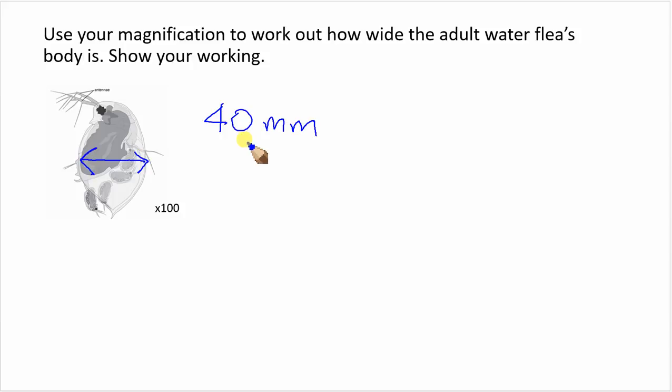Now this water flea appears 40 millimetres wide because it's been magnified 100 times. So to find out that width for real, the actual width, we're going to divide it by 100. 40 divided by 100, we move that decimal point a couple of places to the left. So it's actually going to be 0.4 millimetres wide.